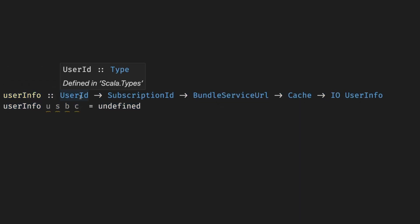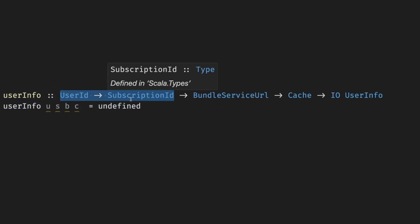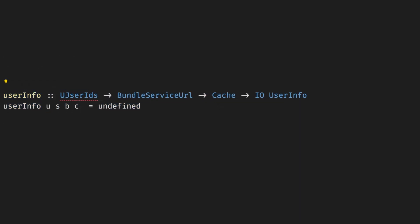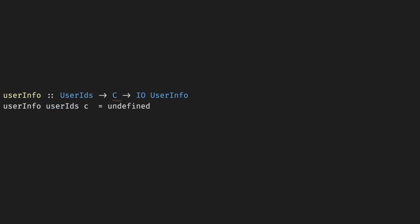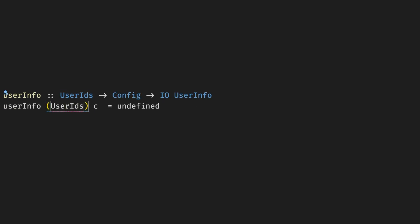Also, if it feels like the number of arguments is getting out of control, you can try introducing records. Instead of using userID, subscriptionID, URLs, caches, and so on, we can group them as configs and group them as userIDs or whatever other input parameters. Then instead of having to deal with different parameters, we just extract stuff out of the record as needed.